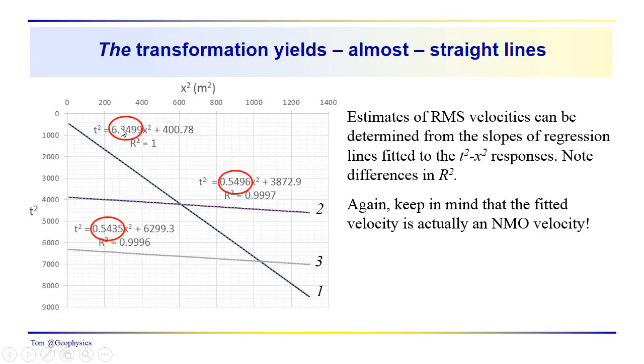So in order to estimate the velocity we're just simply going to take the square root of the reciprocal of this term, this term, this term, in order to get the RMS velocities. Remember the RMS velocities are not the interval velocities, we have to do some additional analysis to get that. But again, the RMS velocities are an approximation of the NMO velocity, and we're going to be getting those from the RMS from the slope term.